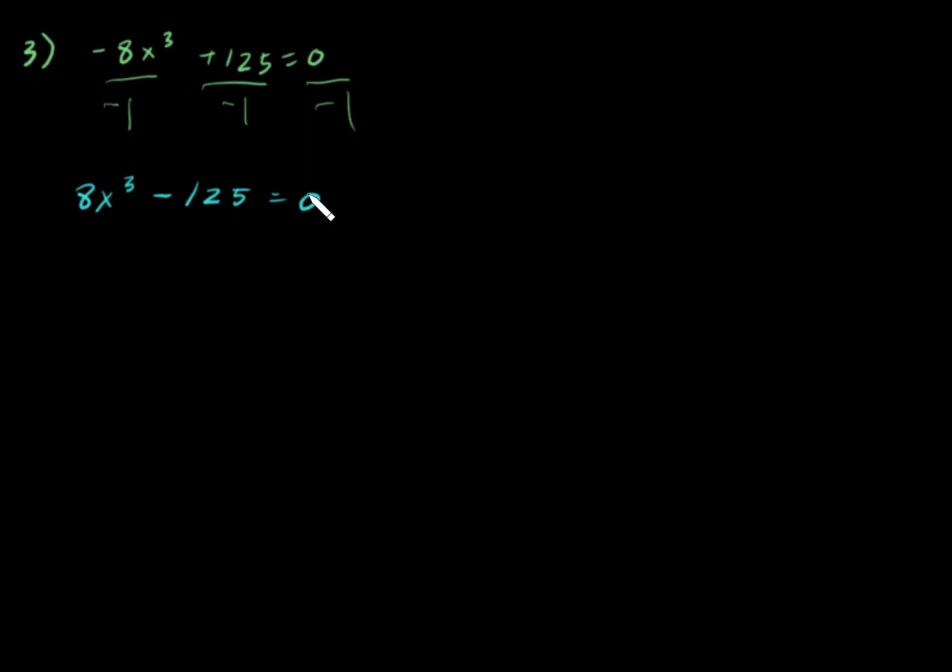8 is made up of three twos. 125 is not divisible by two, so we don't have a GCF, but what we have here is a difference of cubes.